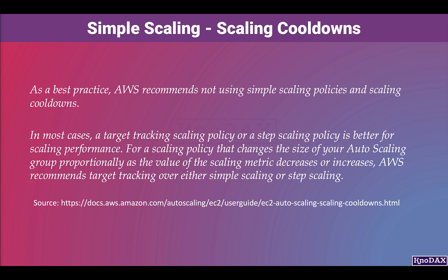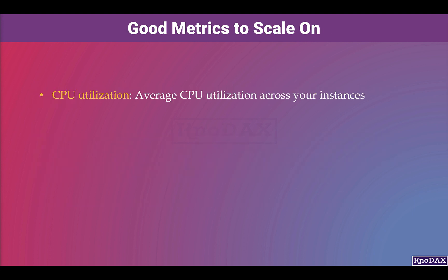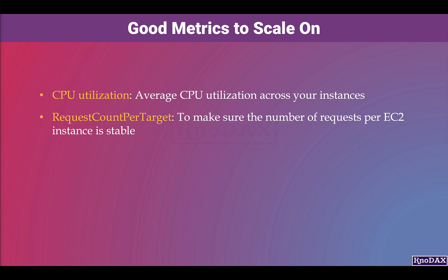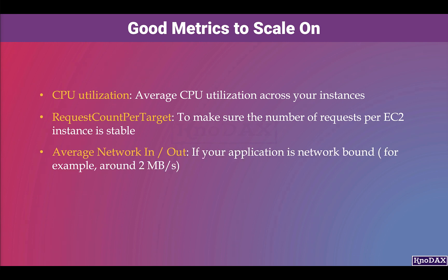For a scaling policy that changes the size of your auto scaling group proportionally as the value of the scaling metric decreases or increases, AWS recommends target tracking over either simple scaling or step scaling. Finally, here are a few good metrics to scale on: CPU utilization, which is average CPU utilization across your instances; request count per target, to make sure the number of requests per EC2 instance is stable; and average network in-out, if your application is network bound, for example, around 2 megabytes per second. I hope you got a good understanding of various EC2 auto scaling policies.